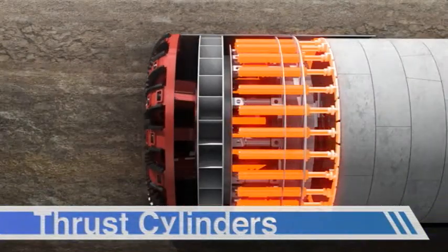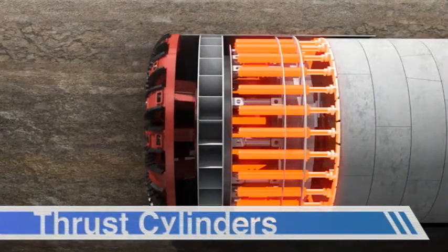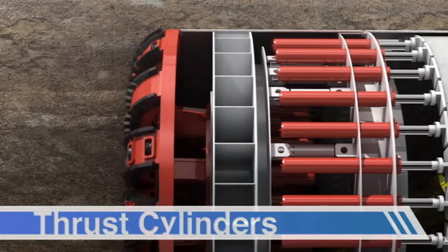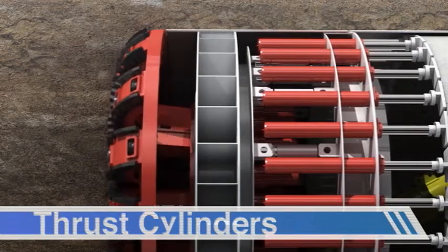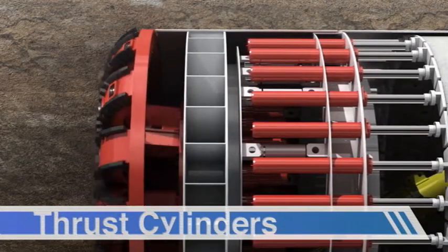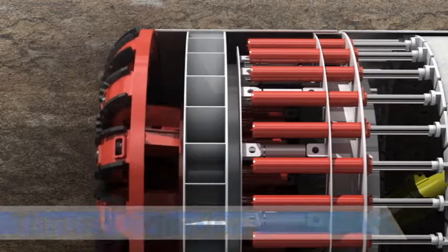The advance of the EPB TBM is produced by the action of the thrust cylinders. These cylinders are mounted in the rear section of the shield body and react against the tunnel lining, transferring its pushing force to the cutter head and allowing the TBM to keep advancing.